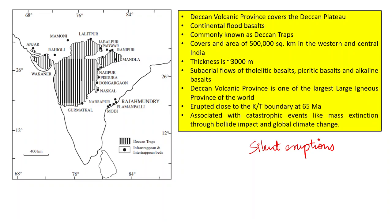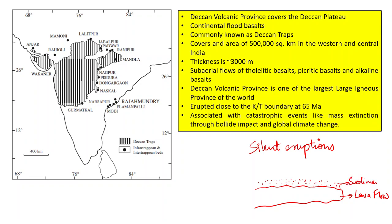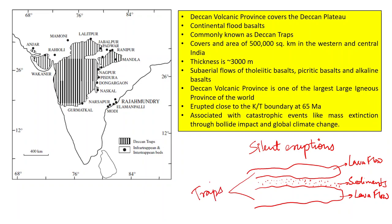The word 'trap' is used for these rocks because they cover a large area as lava flows. Between lava flow layers there are sediments, and then again a layer of lava flow. The sediments between the lava flows are called intertrappean beds.